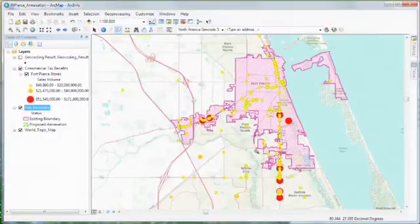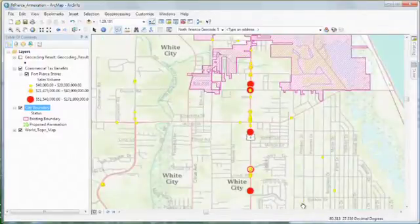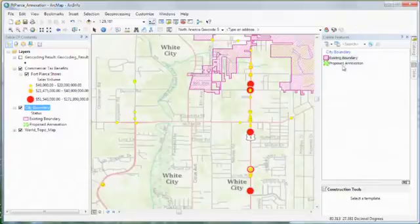The proposed annexation area is located to the south of the existing city boundary. I can quickly sketch the area, adding it to the city boundary layer with a different classification.